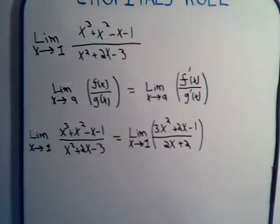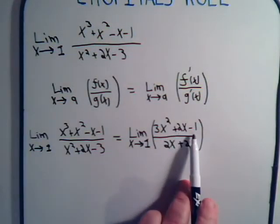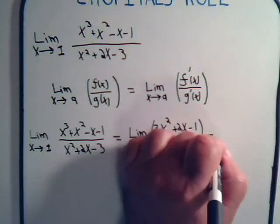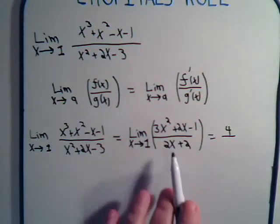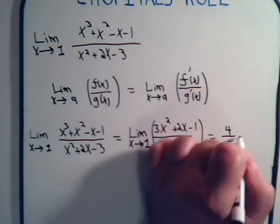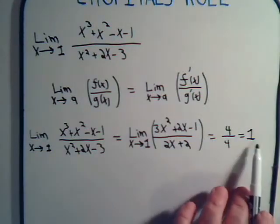Okay, now what happens when we plug in x equals 1? Here we'll have 3 plus 2 is 5, minus 1, that's 4. And down here we have 2 plus 2 is 4. So it comes out that the limit of this is 1.